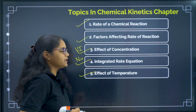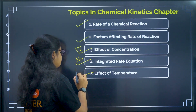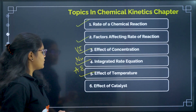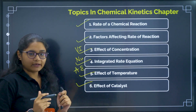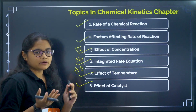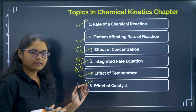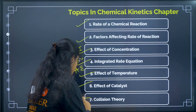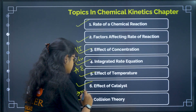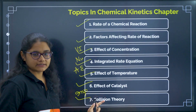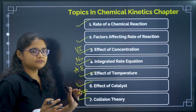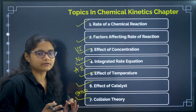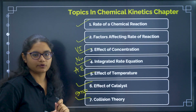Next is effect of temperature — again, a very important topic — where we discuss the Arrhenius equation. Next is effect of catalyst, not very important; one question is sometimes asked from this topic. Next is collision theory, again an important topic. It is completely theory-based: questions generally ask us to choose correct or wrong statements from this topic.